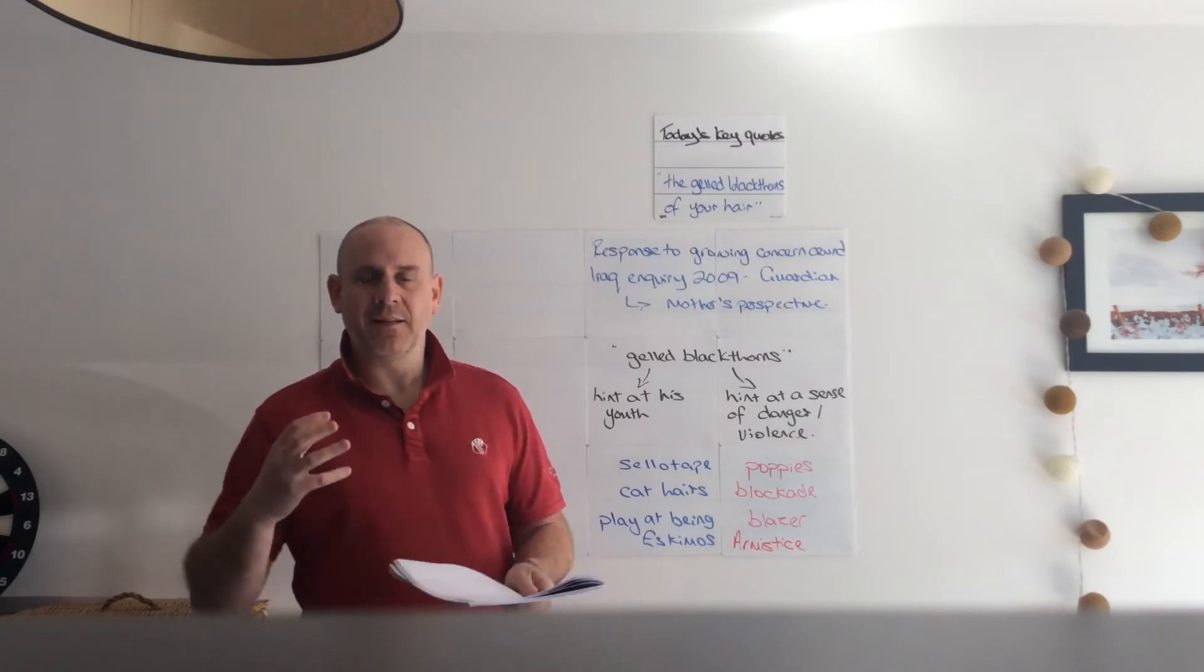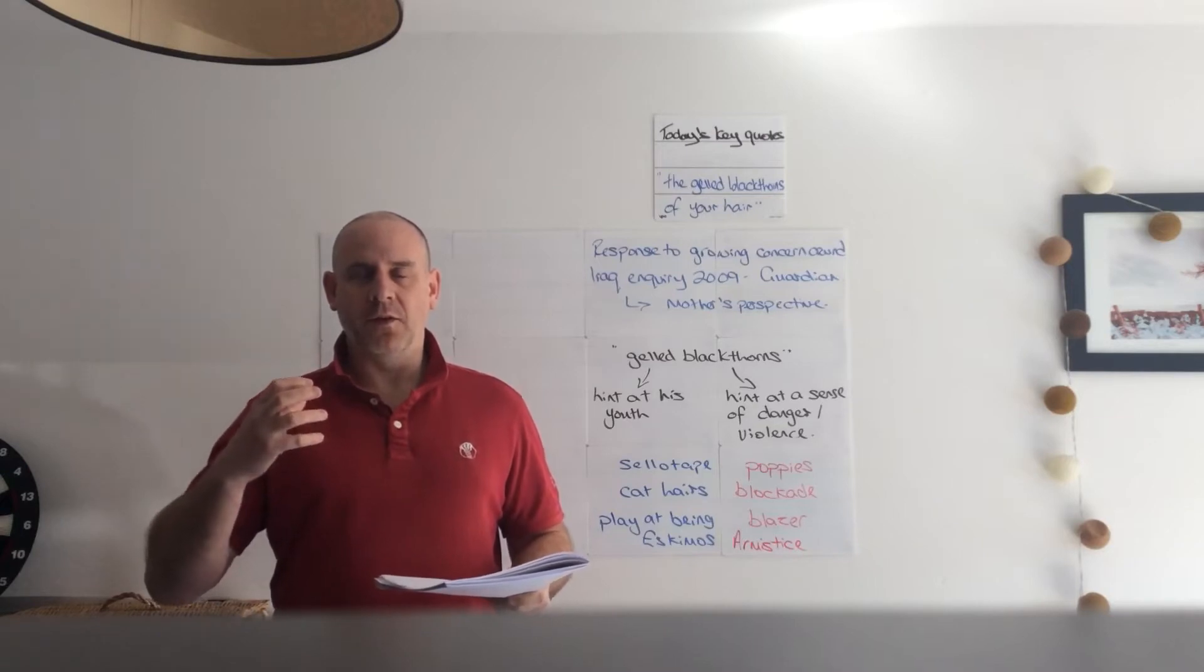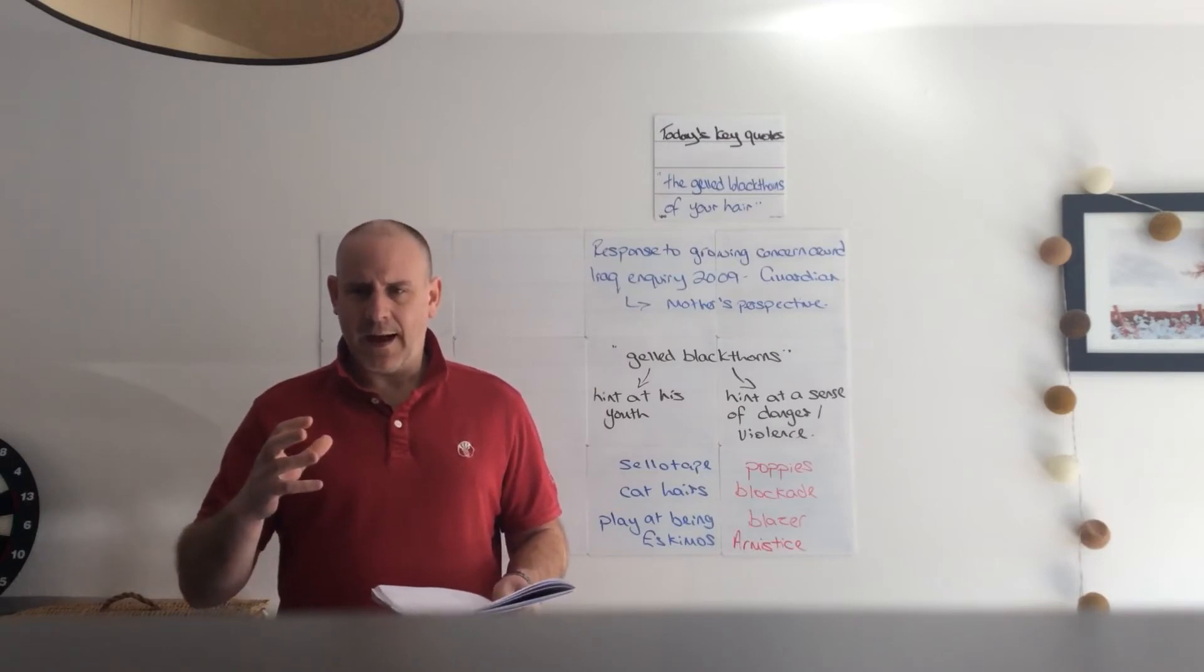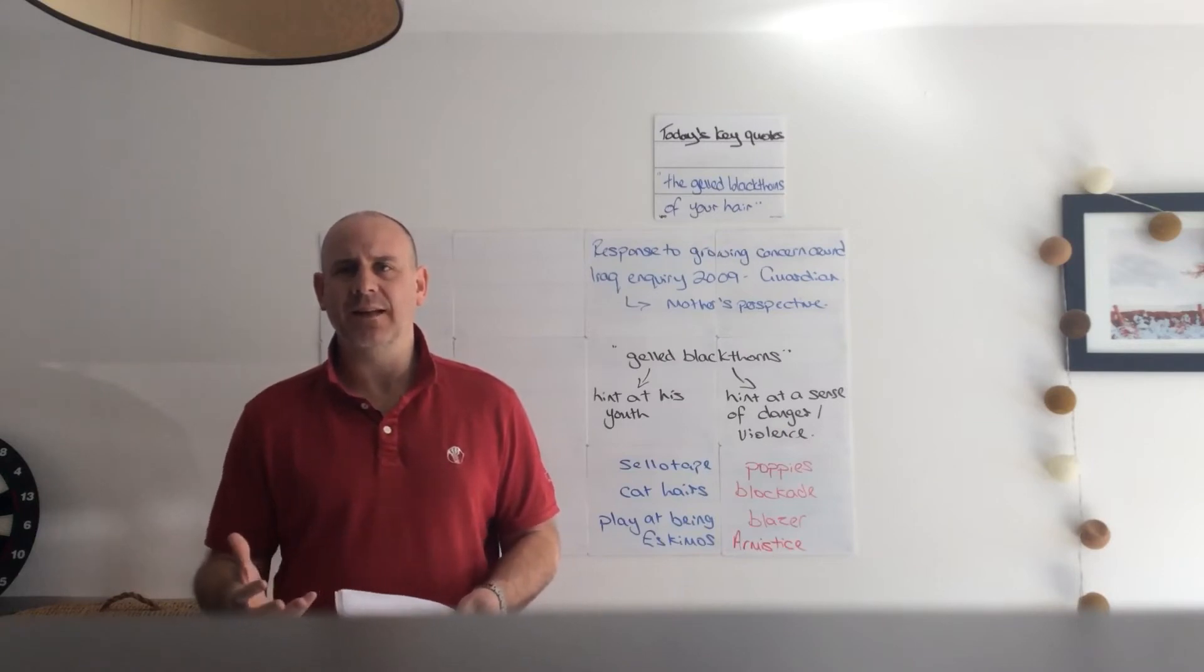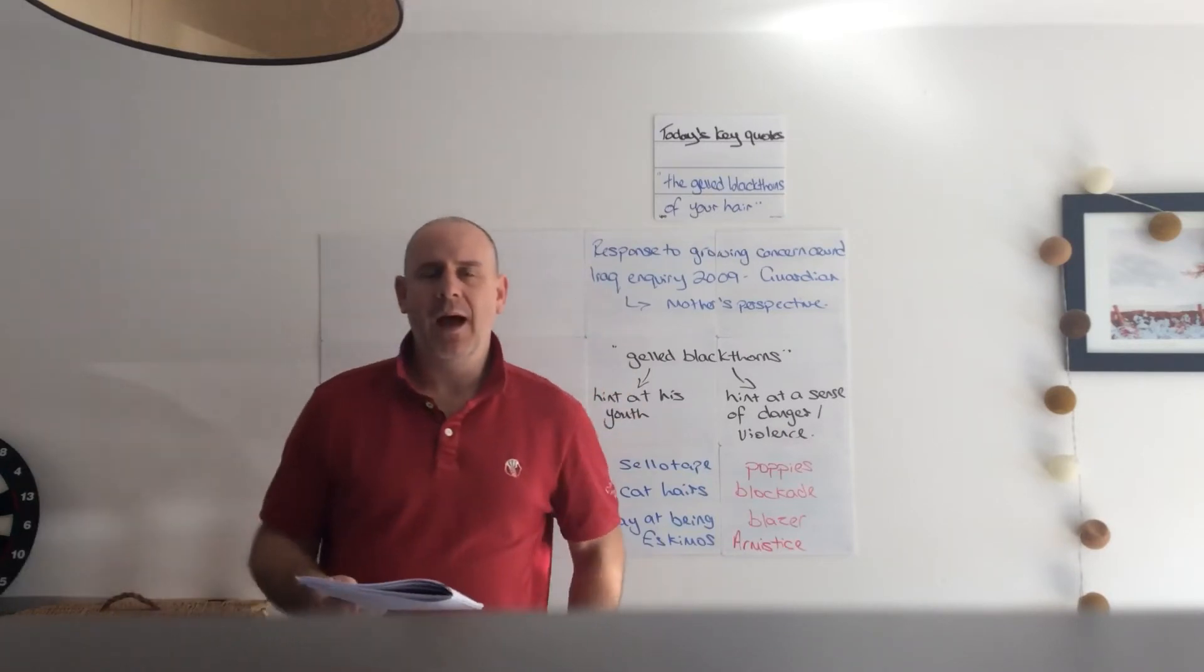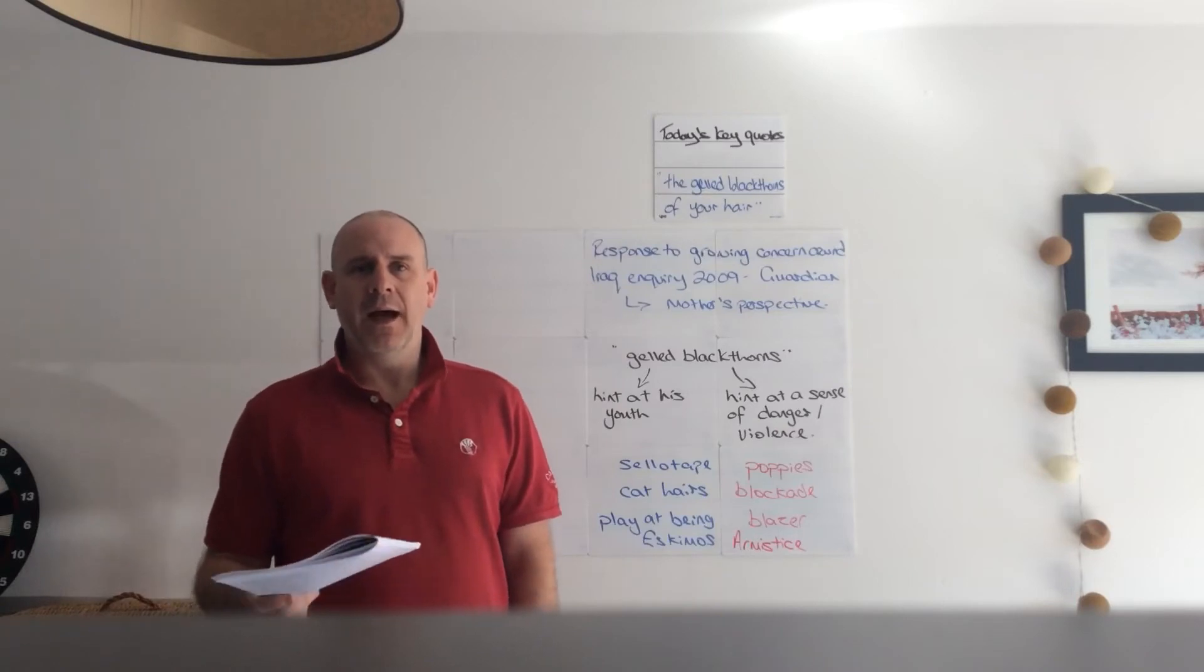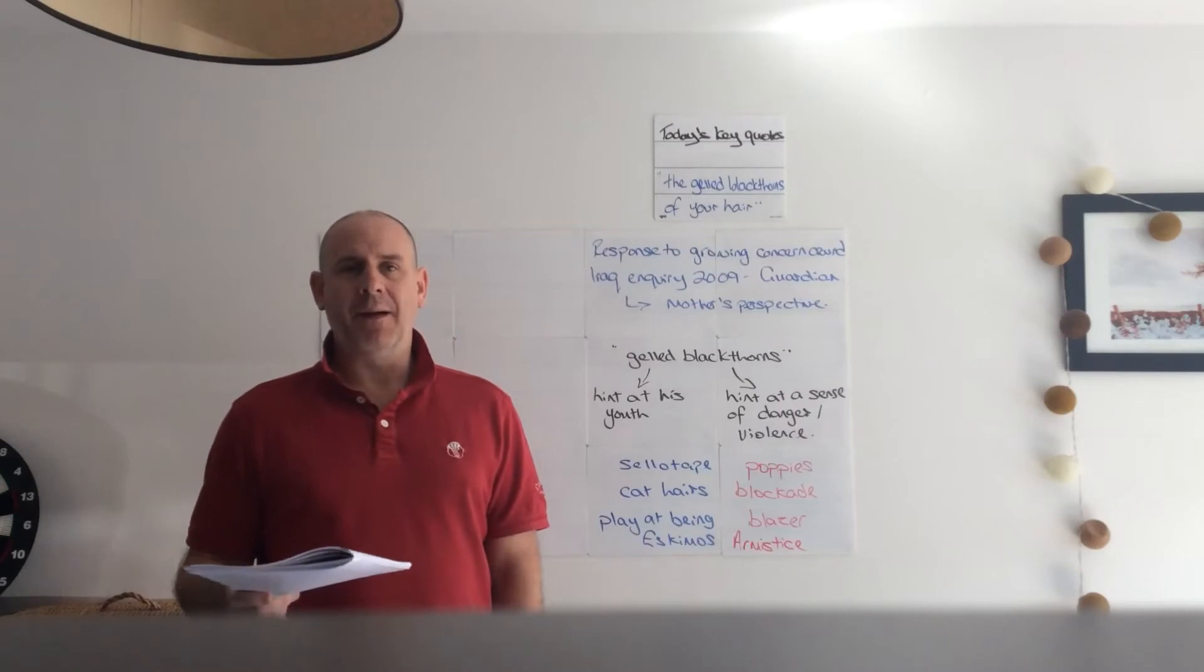Three days before Armistice Sunday, and poppies had already been placed on individual war graves. So initially we've got the sense of the military, the pride in the armed services, but we've also got that hint of death, the tragedy that is to come. Jane Weir wrote this poem that was published in the Guardian in 2009. At the time, the really important contextual information, the British was still involved in Afghanistan.